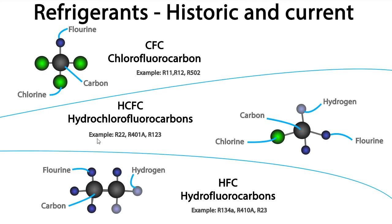Here are examples of each of the different types of refrigerants within these categories. The CFCs you probably won't come across as they're all banned now — if you do come across them you really need to report this and get them changed over to a more recent refrigerant, as these are horrendously bad for the environment. The ones you'll still probably come across are R22, R41A, and R123 — you should be retrofitting these if you haven't already. And the ones you'll definitely still come across are R134A, R410A, R23, etc.